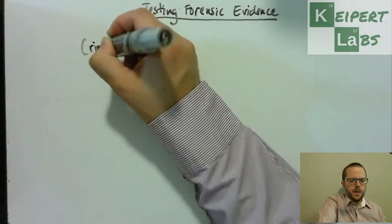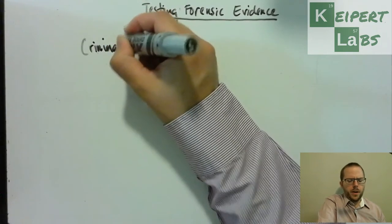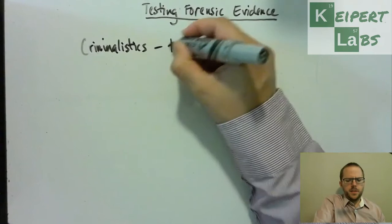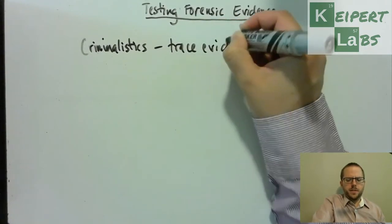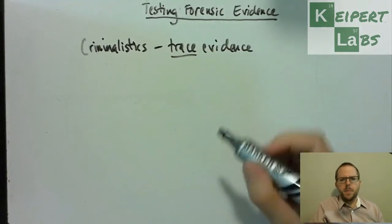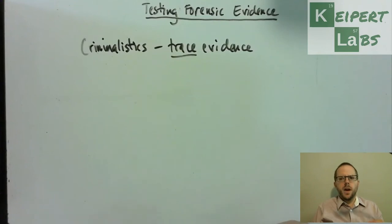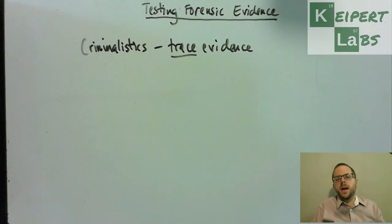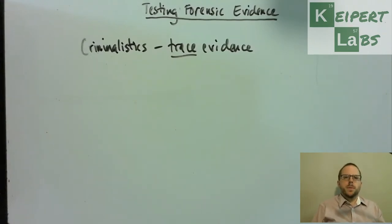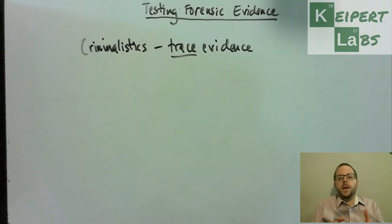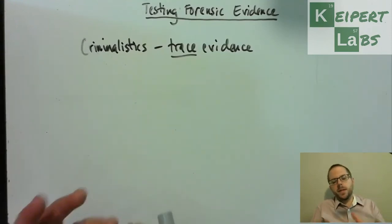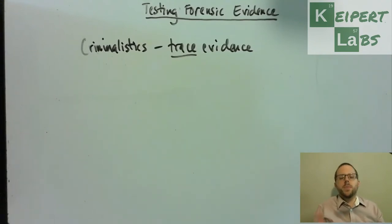In forensic science we have a particular branch called criminalistics, which relates to the examination of trace evidence. Trace evidence may be microscopic — it's the little bits of evidence that get transferred when there is contact between two objects or two things at a crime scene. That might be a contact between the victim and the perpetrator, or between the perpetrator and the crime scene, or maybe some trace evidence from where the perpetrator lives that gets transferred to the crime scene, the victim, or a murder weapon.